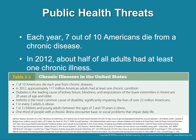One in every three adults is obese — and that one can be fixed, but it causes a lot of morbidity. One in five young adults between the ages of 2 and 19 is also obese. One third of people with a chronic illness encounter basic or social problems that impair daily life.